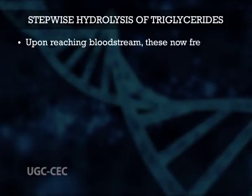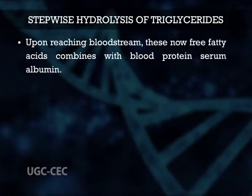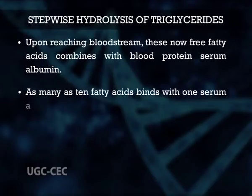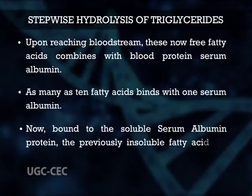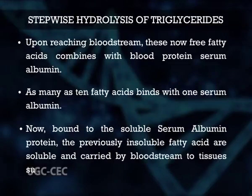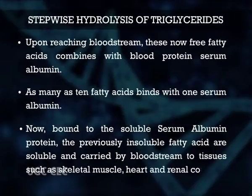The free fatty acids released pass from the adipocytes into the bloodstream. Upon reaching the bloodstream, free fatty acids combine with the blood protein serum albumin — as many as 10 fatty acids can bind to one serum albumin. Bound to serum albumin, the previously insoluble fatty acids become soluble and are carried by the bloodstream to tissues such as skeletal muscle, heart and renal cortex. Upon reaching target tissues, the fatty acids dissociate from serum albumin and are moved by plasma membrane transporters toward the mitochondria, where oxidative enzymes are located.